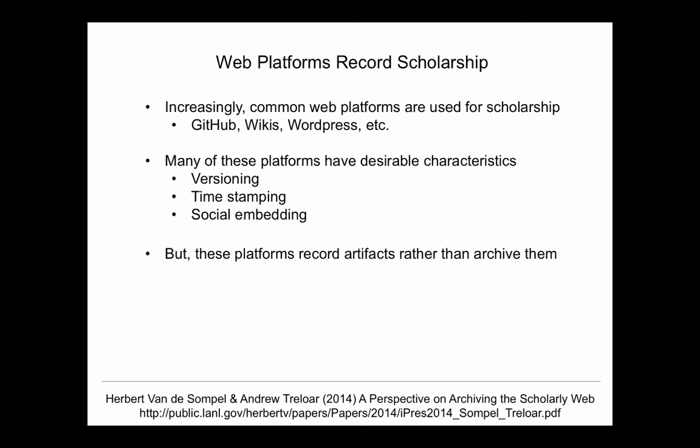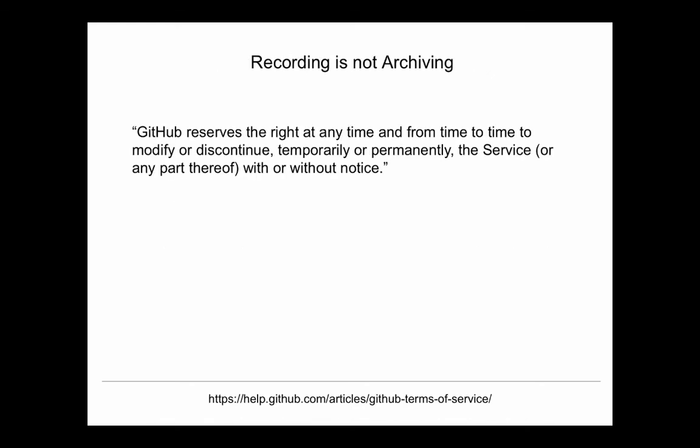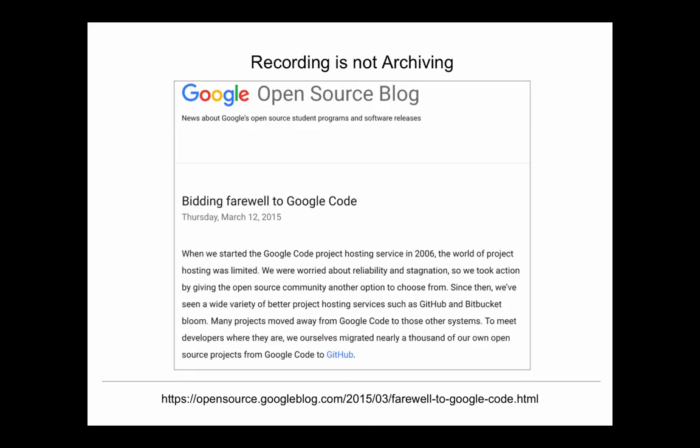To illustrate that point, it suffices to look at part of GitHub's terms: 'GitHub reserves the right at any time to modify, discontinue, temporarily or permanently, the service without any prior notice.' This is not an archival service. And to make another point — you probably all remember Google Code, which at one point was really the repository for software collaboration. Since 2015, it's gone. Everyone uses GitHub now. And what will be next? The point is, longevity is not necessarily part of the business model of these kinds of portals.